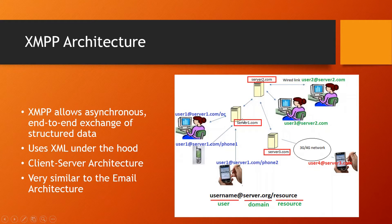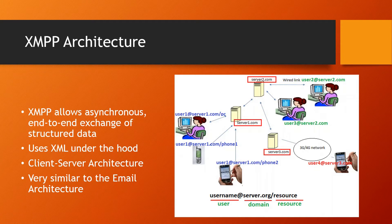The XMPP architecture really looks like this — you have a bunch of clients and servers that are connected to each other. XMPP allows asynchronous end-to-end exchange of structured data. It is end-to-end because user1 at server1.com can send a message to user2 at server2, like a pipe taking messages from one node to another. Asynchronous means it's a fire-and-forget mechanism — you push the message out and they can receive it at their own time. For example, you can send it when they are not online and when they come online the server pushes the message to them. XMPP uses XML under the hood.